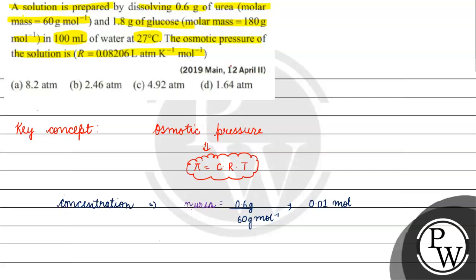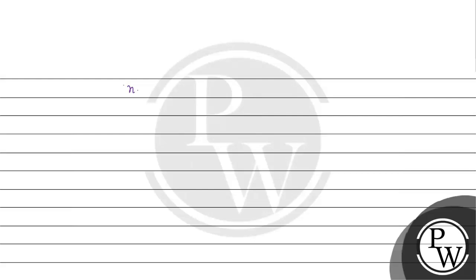Next, the number of moles of glucose: this will come out to be 1.8 gram divided by 180 gram per mole, which equals 0.01 mole. The total number of moles will be equal to 0.01 plus 0.01, giving 0.02 moles total.